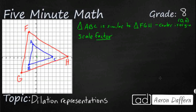And we'll get the other set of coordinates. So let's figure out the coordinates for A, B, and C. A is (-1, 3). B is (-2, -2). And C is (0, 4).